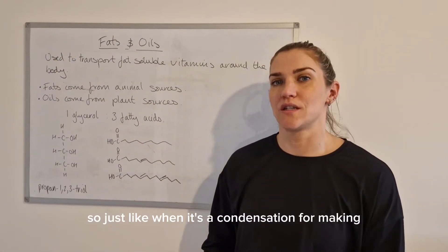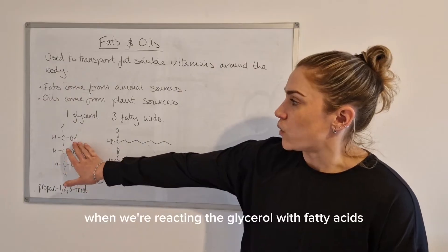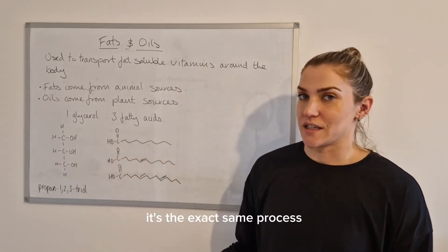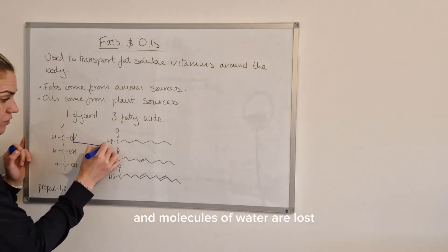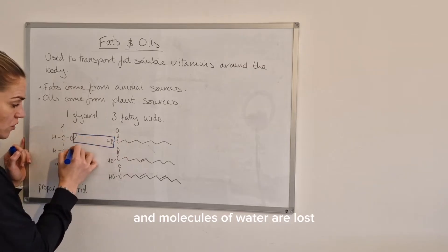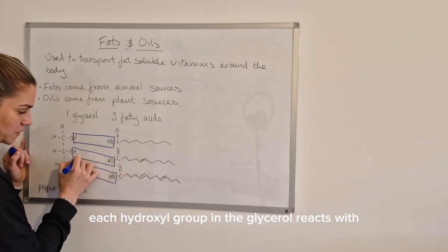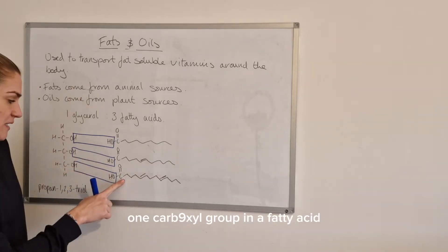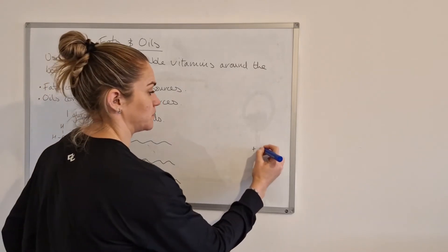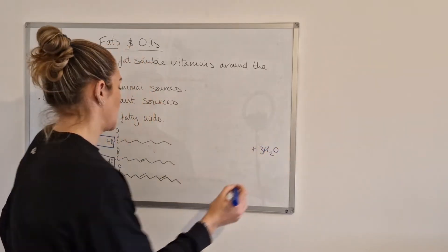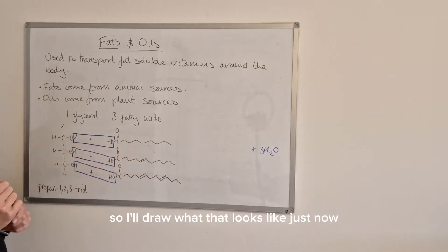Just like when it's a condensation for making small esters that we looked at before in a previous video, when we're reacting the glycerol with the fatty acids it's the exact same process. Each hydroxyl group in the glycerol reacts with one carboxyl group in a fatty acid. We end up with three molecules of water, three molecules of H2O, and these oxygens all join up with these carbons.